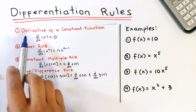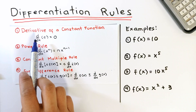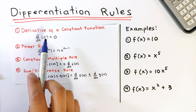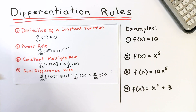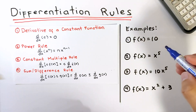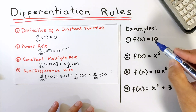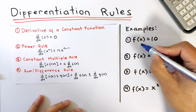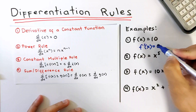First rule: derivative of a constant function. The derivative of a constant, let's say c, is equal to 0. That is, the derivative of any constant is equal to 0. Example: given f(x) = 10, its derivative f'(x) is equal to 0.